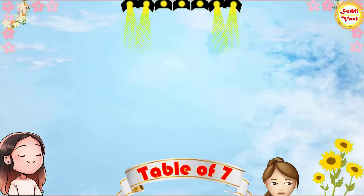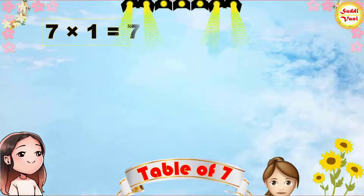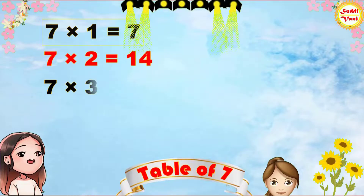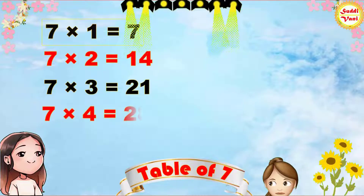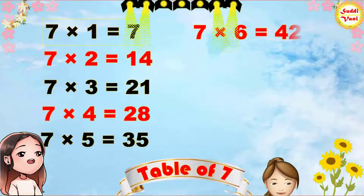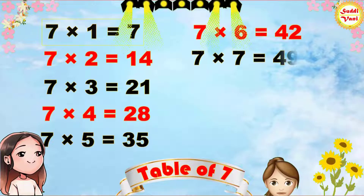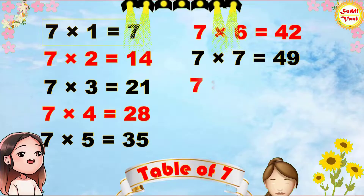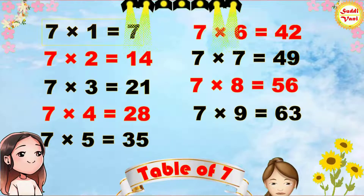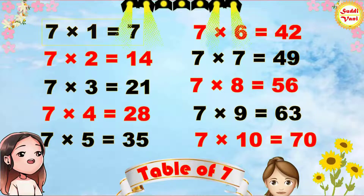Once again: 7 1s are 7, 7 2s are 14, 7 3s are 21, 7 4s are 28, 7 5s are 35, 7 6s are 42, 7 7s are 49, 7 8s are 56, 7 9s are 63, 7 10s are 70.